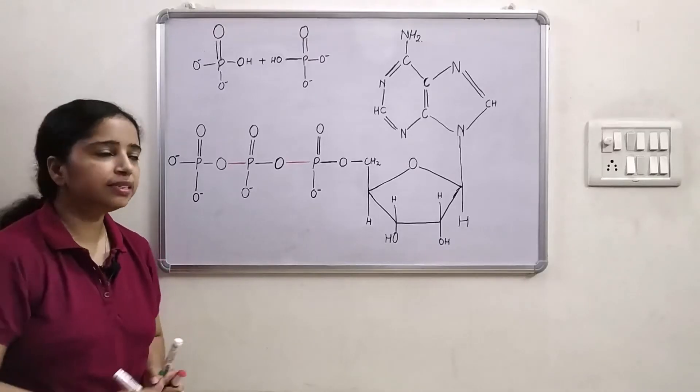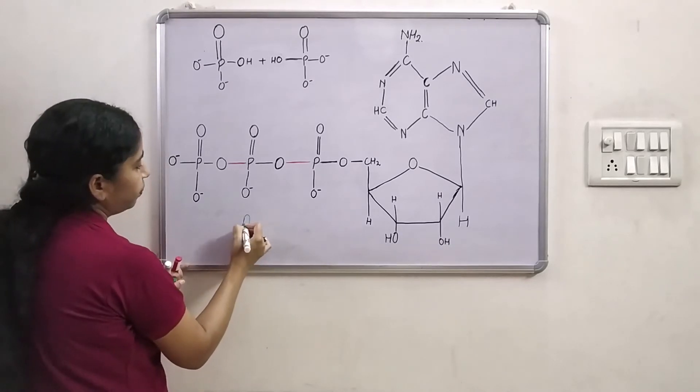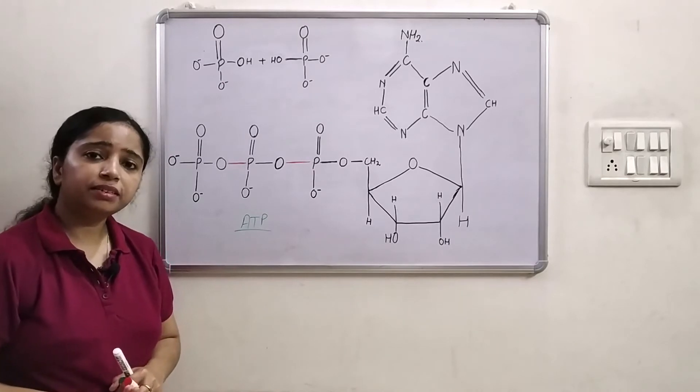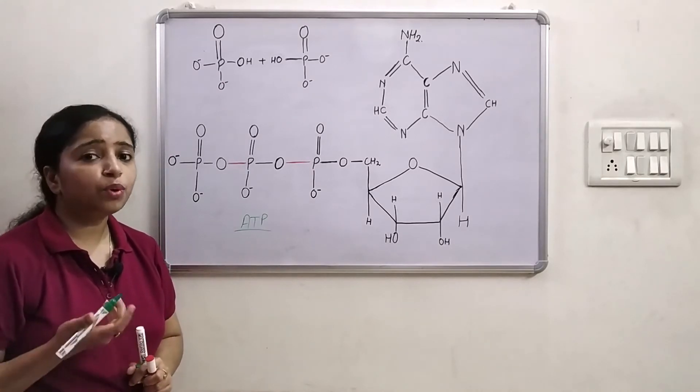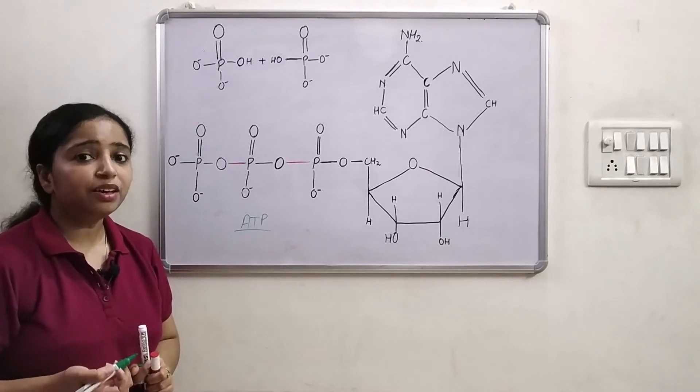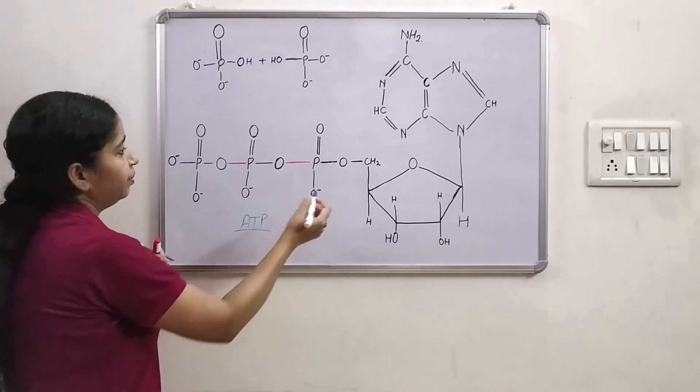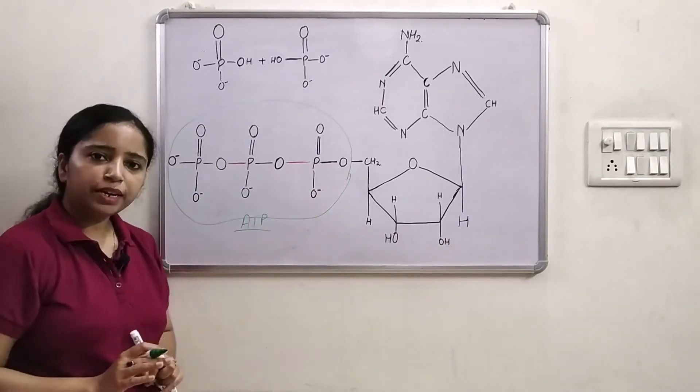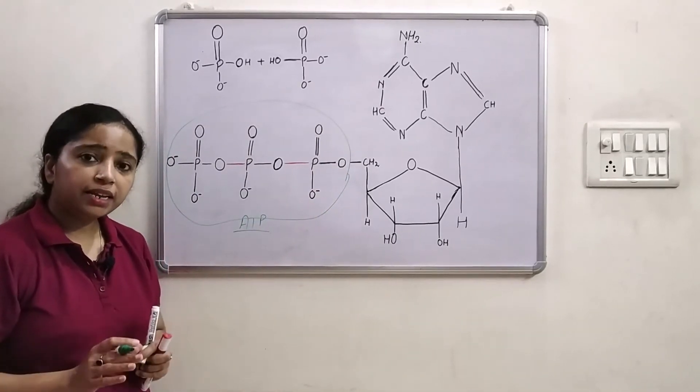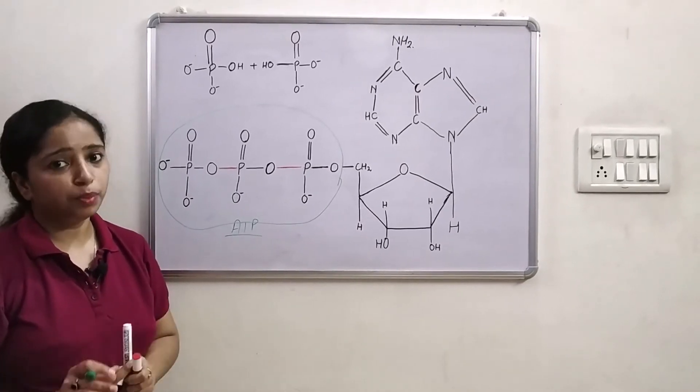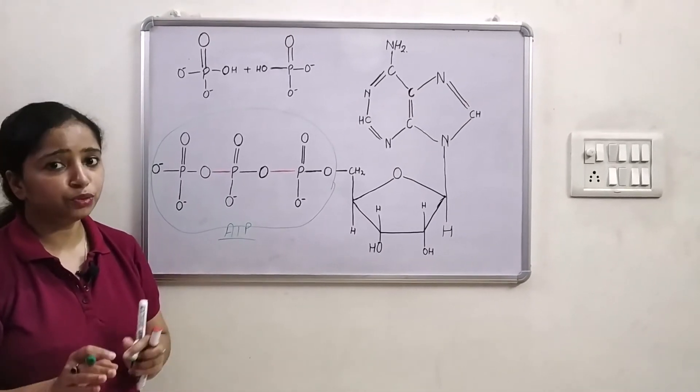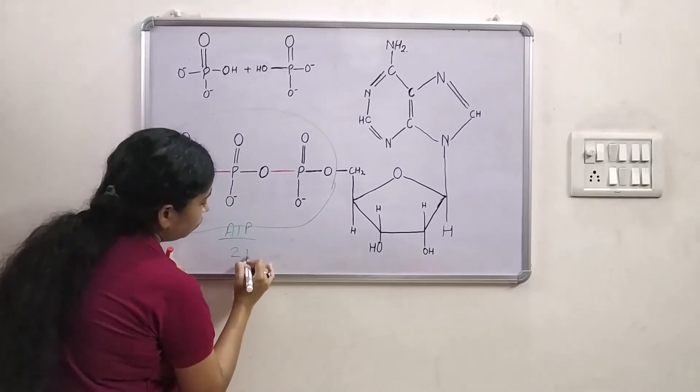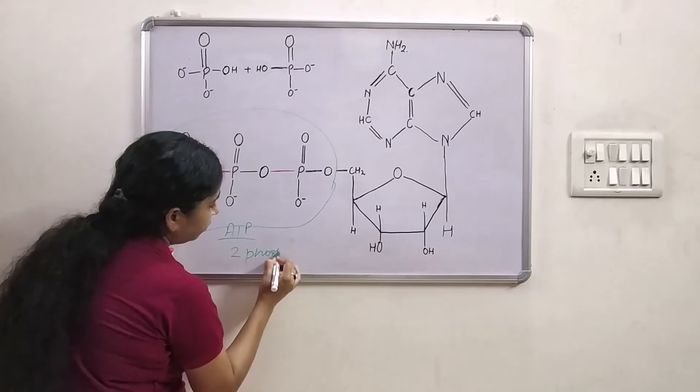So guys this is the complete structure of ATP. Now where energy lies inside ATP? The secret of all the energy of ATP lies in the triphosphate group here. Useful energy of ATP lies in two phosphoanhydride bonds or contained in two phosphoanhydride bonds. ATP has two phosphoanhydride bonds.